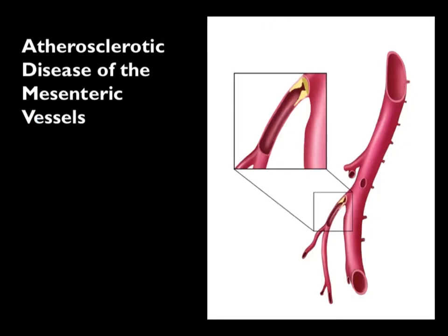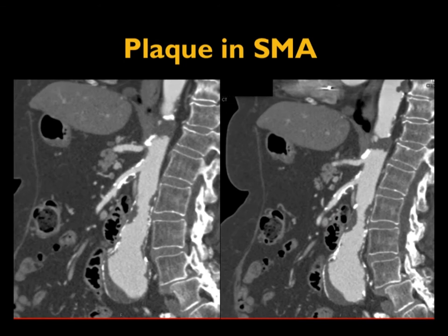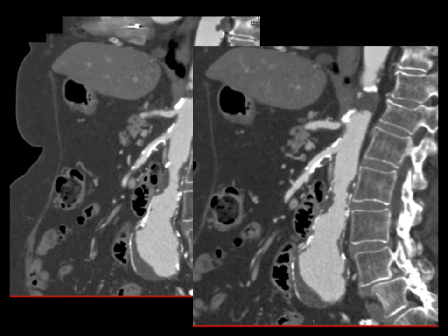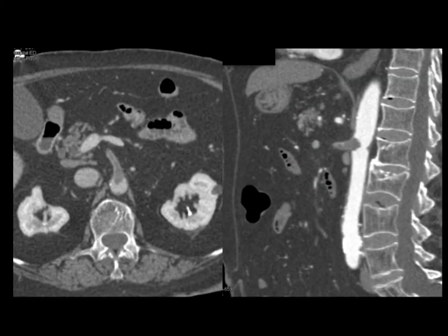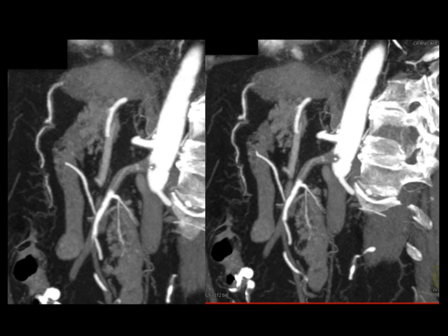Things we look for: we look at the vessels. Is there plaque present? Is there stenosis? Sagittal views are critical. Here there's plaque at the origin of the celiac and lots of plaque in the SMA — calcified and non-calcified — but the vessels are patent. In this case, you see occlusion of the SMA, seen on the axials and better on the sagittal view. On MIP it's occluded proximally and then you see flow distally — occlusion due to thrombus proximally.